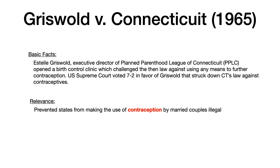Now we'll talk about Griswold versus Connecticut. Estelle Griswold was the executive director of Planned Parenthood League of Connecticut. She opened a birth control clinic with the intention of challenging a then-Connecticut law which made it illegal to use any means to further contraception. The U.S. Supreme Court voted in favor of Griswold, striking down the law that prohibited using any means to further contraception. The takeaway is that it prevented states from banning the use of contraception by married couples.